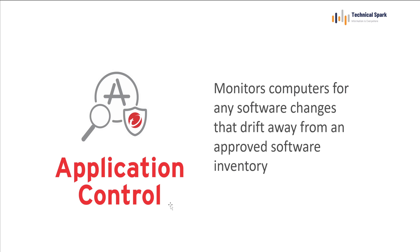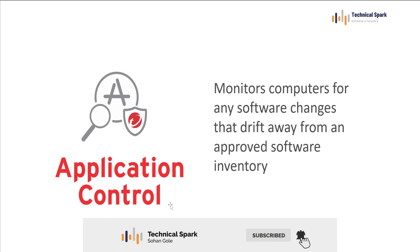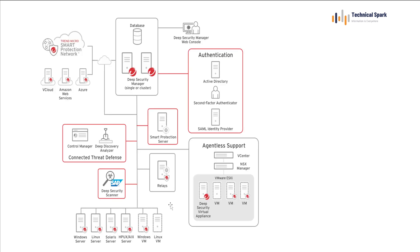Application control is my favorite module because it completely locks down your entire operating system — only approved applications can execute, and specific unwanted software is stopped from running. When you enable application control on a server, it scans your entire server and whitelists all applications installed at the time of enabling. Once application control is enabled in prevent mode, Trend Micro blocks all new applications that attempt to execute on that particular server. This is a very interesting feature we'll test as well.